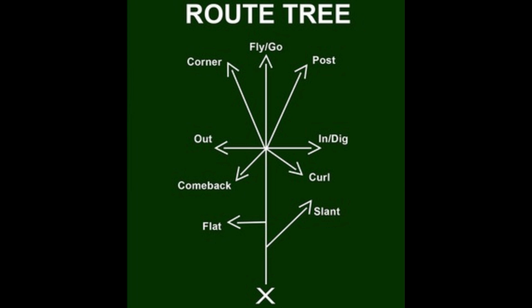Ironically, the name of this channel, Jerk Routes, the jerk route is not listed on the route tree. It's not a basic route, it's a much more advanced route. These are the nine basic routes that you would expect to see in many offenses, from the flat to the slant all the way to the fly pattern, the go, and then the corner and the post.